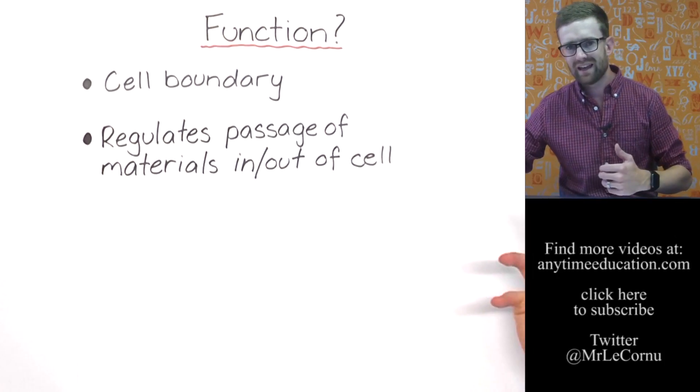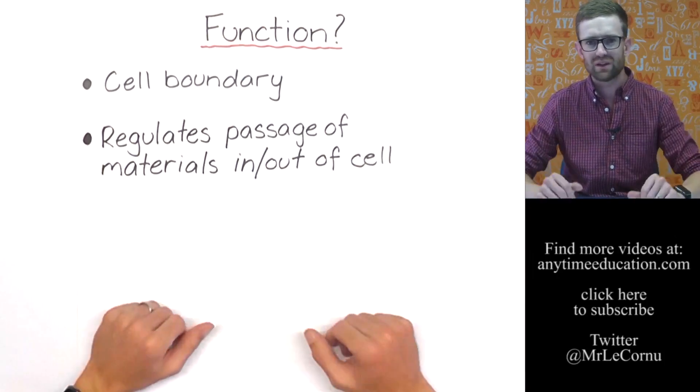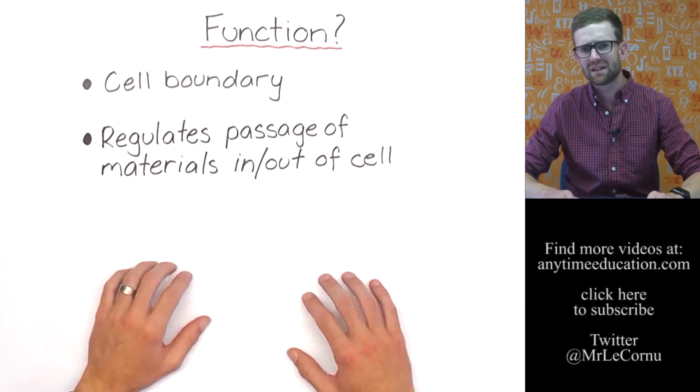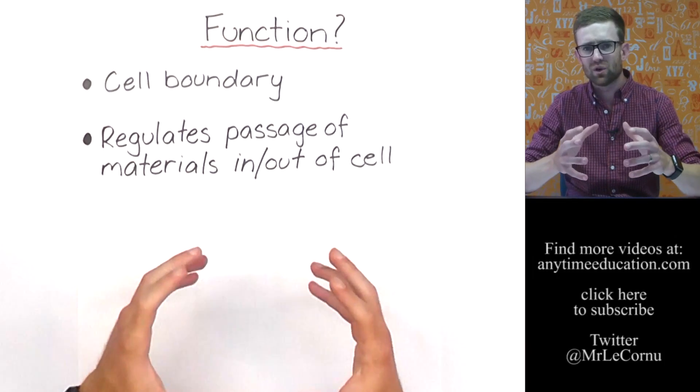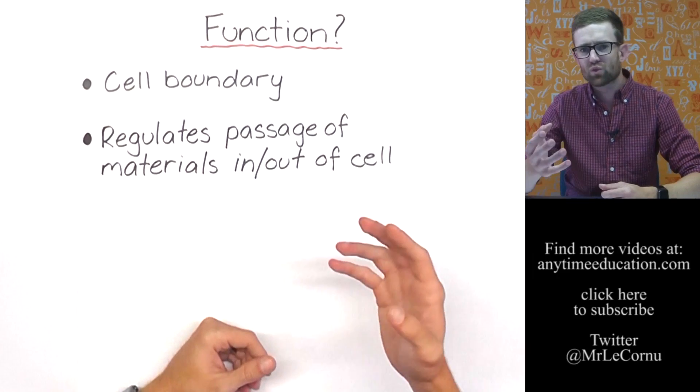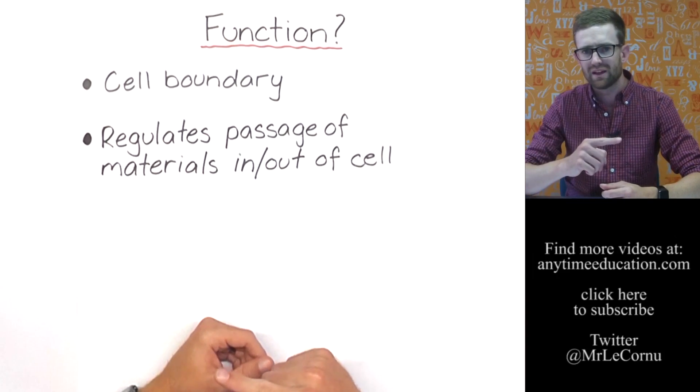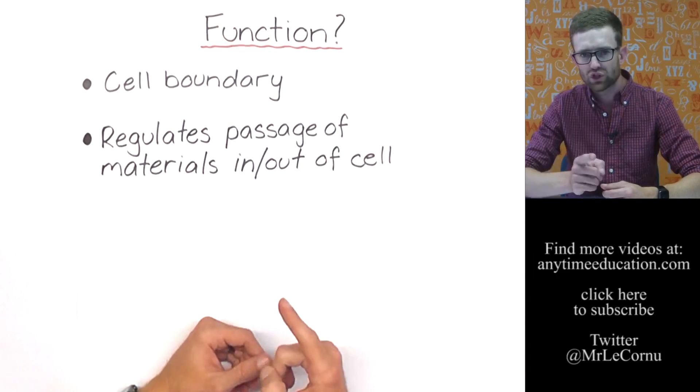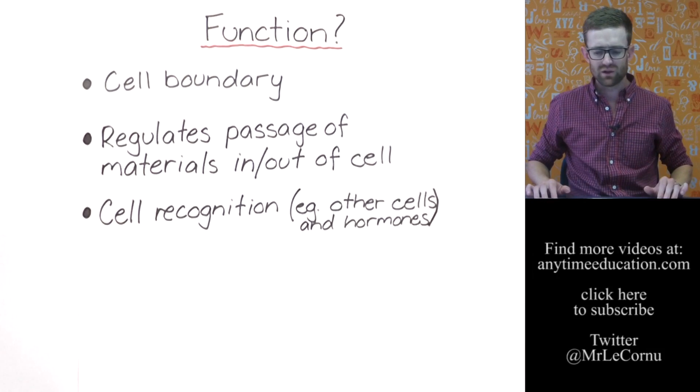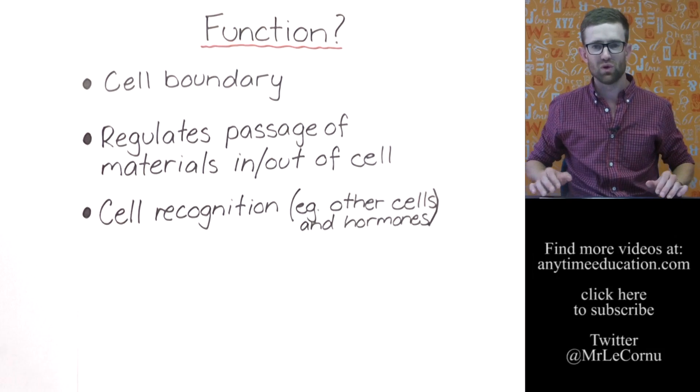So the cell membrane plays a role in deciding what's going to enter the cell and what's going to exit the cell, which is really, really important. We'll get back to that in a minute, but that's where the proteins play a role. The proteins, as we saw, can be involved in helping things move in and out of the cell and recognizing what should be moving into and out of the cell and what shouldn't be moving into and out of the cell.